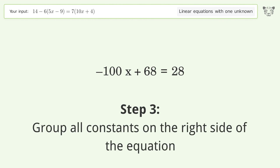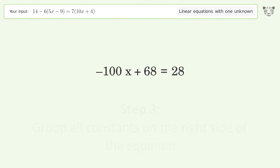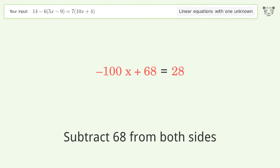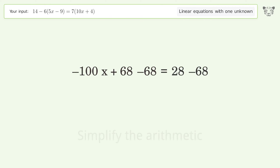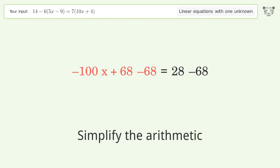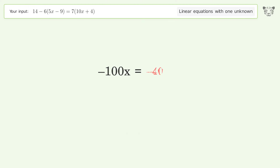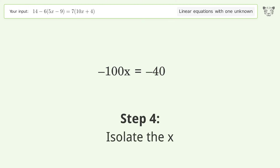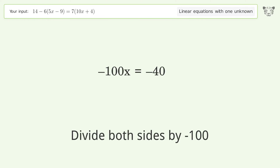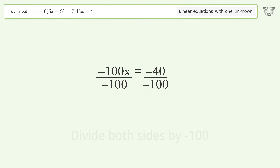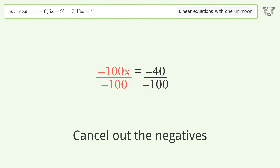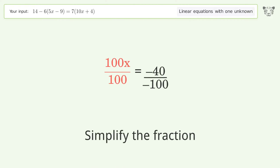Group all constants on the right side of the equation. Subtract 68 from both sides and group like terms. Cancel out the negative on the left side of the equation and simplify the fraction.